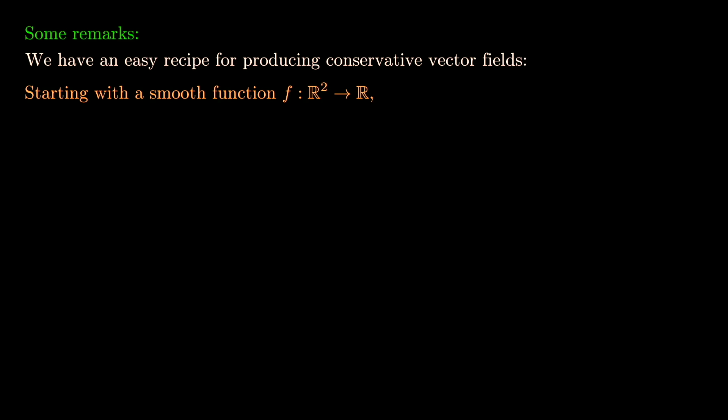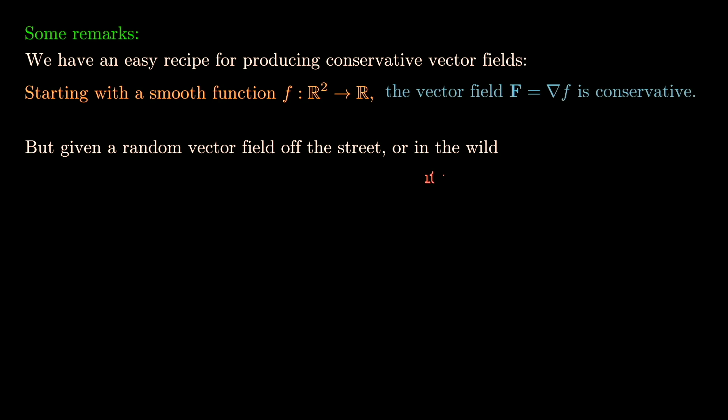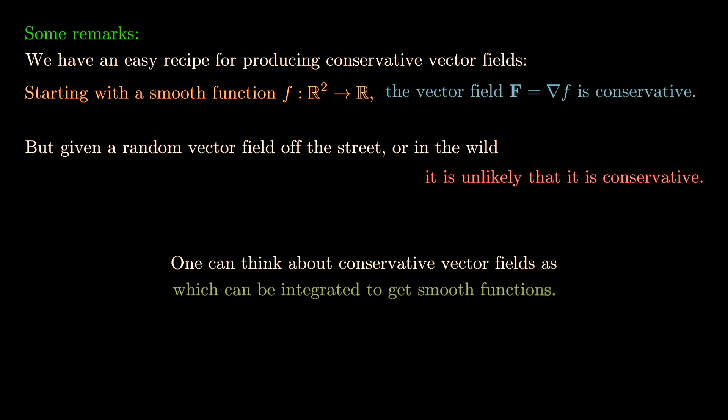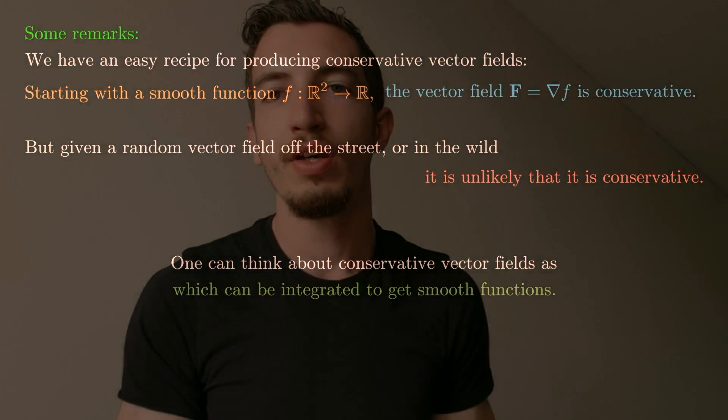Some remarks: there's an easy recipe for producing conservative vector fields — just take the gradient of any smooth function. But a random vector field is unlikely to be conservative; it's quite a restrictive condition. Think of the gradient as a kind of derivative, and conservative vector fields as those that can be 'integrated back' to a smooth function.